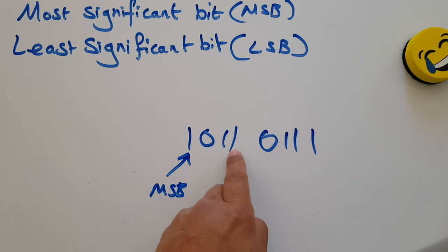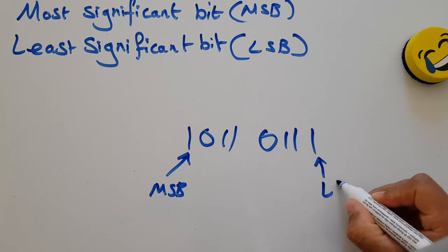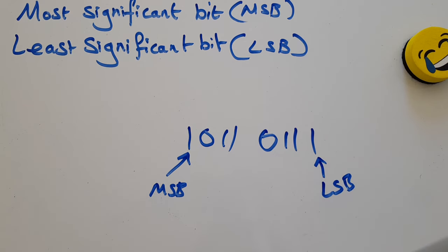1, 2, 4, 8, 16, 32, 64. It's worth 128. And that is still my least significant bit.